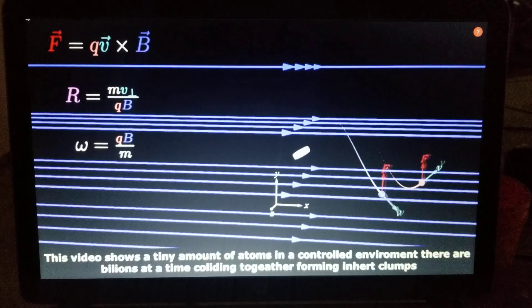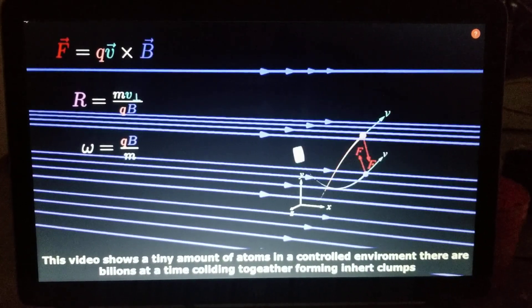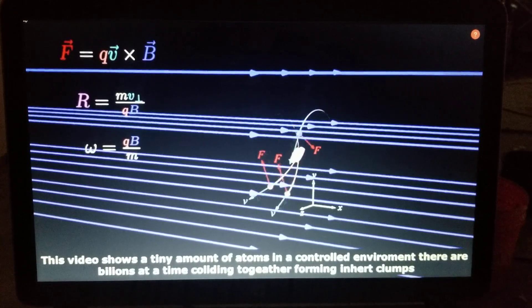This video shows a tiny amount of atoms in a controlled environment. There are billions at a time colliding together forming inert clumps.